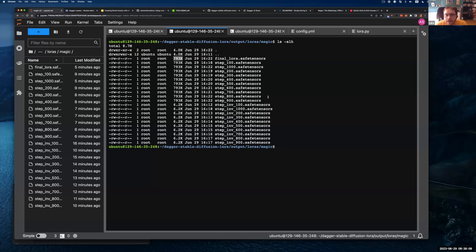And that generated an output, it generated this LoRa and it is a magic LoRa because it's magic the gathering. And what you can see here is that it's generated this file called final LoRa.safetensors. If I go and load up the terminal, I know I'm nearly over time, then you'll see it's just 793 kilobytes, which is pretty cool.